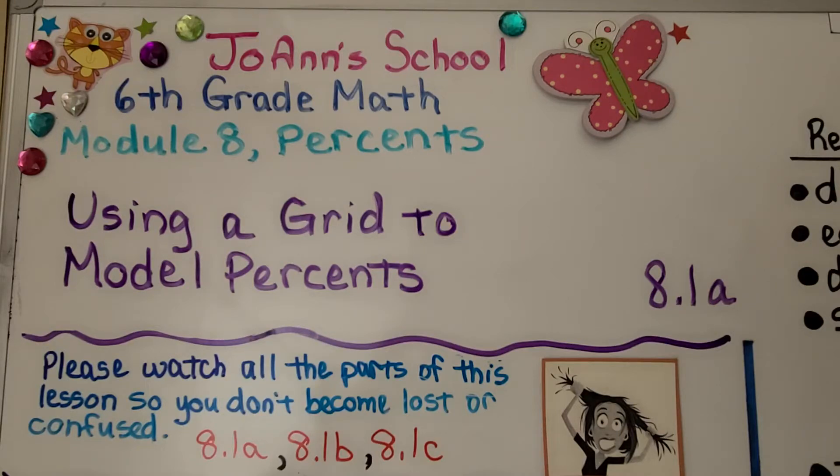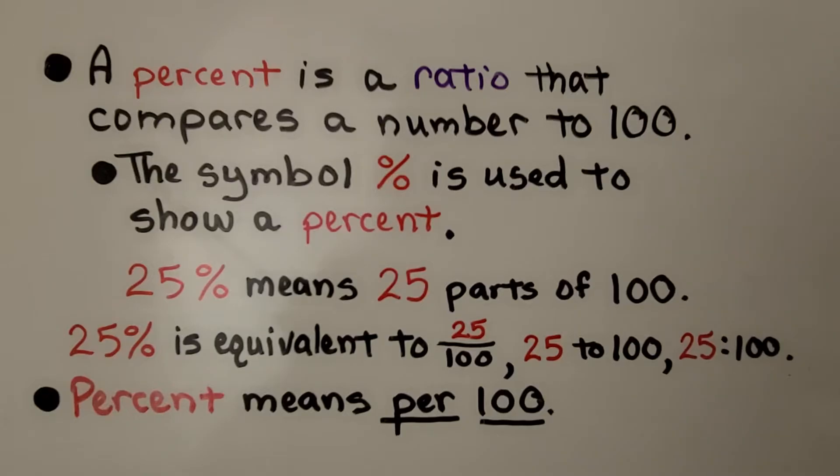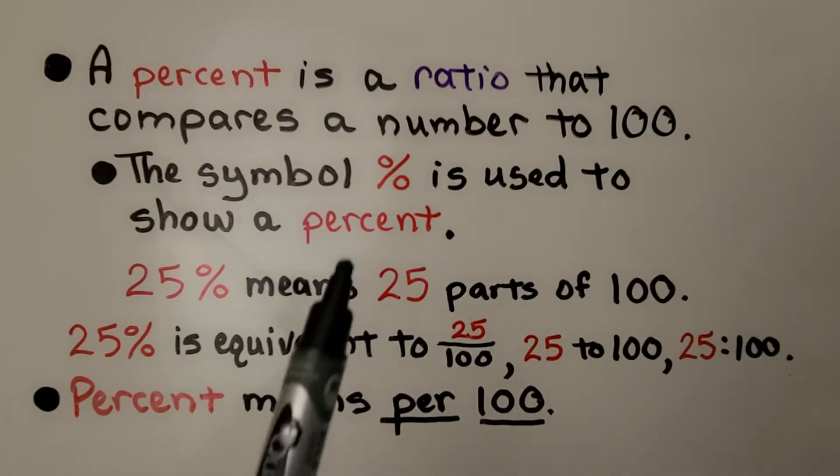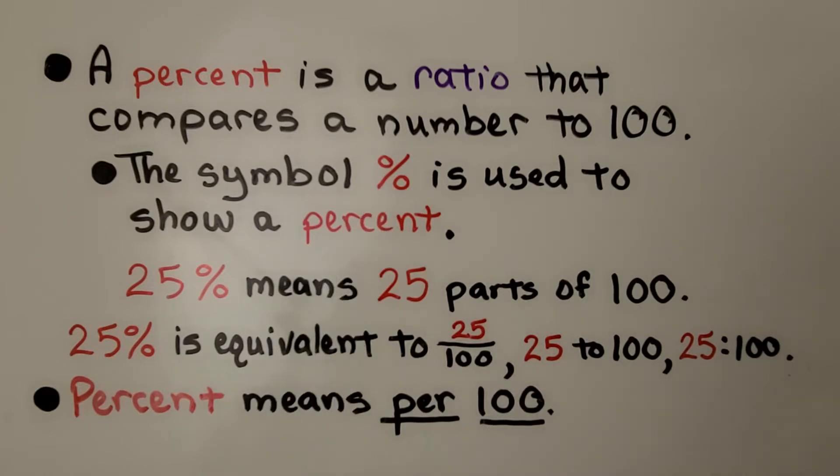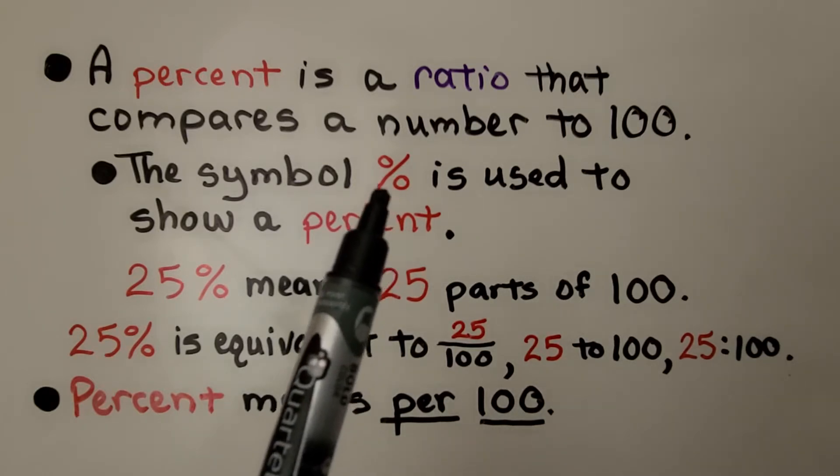We're in module 8 now about percents. This is 8.1a using a grid to model percents. A percent is a ratio that compares a number to 100 and this symbol is used to show a percent. It's the percentage symbol.